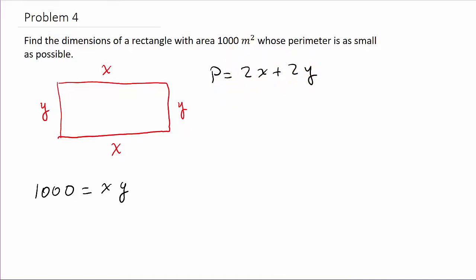Alright, so we want to minimize this. So we need to take the derivative. Well, before we do that, let's get this all in terms of one variable. So let's get it all in terms of x. Well, we know 1000 is equal to x times y, so that tells us that y is equal to 1000 over x. So we'll plug this in for y, so I get p is equal to 2x plus 2 times 1000 over x. And so the perimeter is 2x plus 2000 over x.